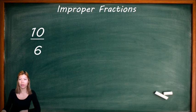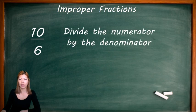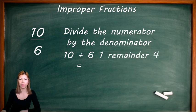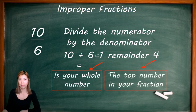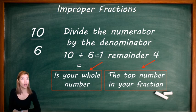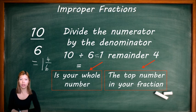Let's do another example — convert this into a mixed number. You divide the numerator by the denominator: 10 divided by 6 gives us 1 remainder 4. So 1 is your whole number, and the remainder becomes the top number of your fraction — so we have 1 and 4 over 6. We can simplify it, but we'll skip it for now.